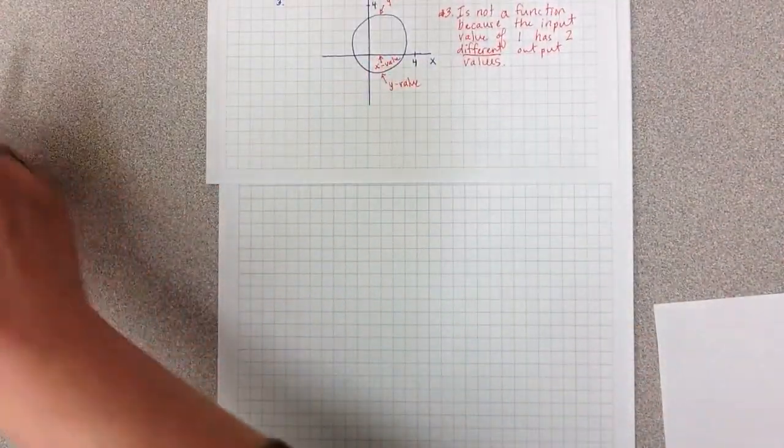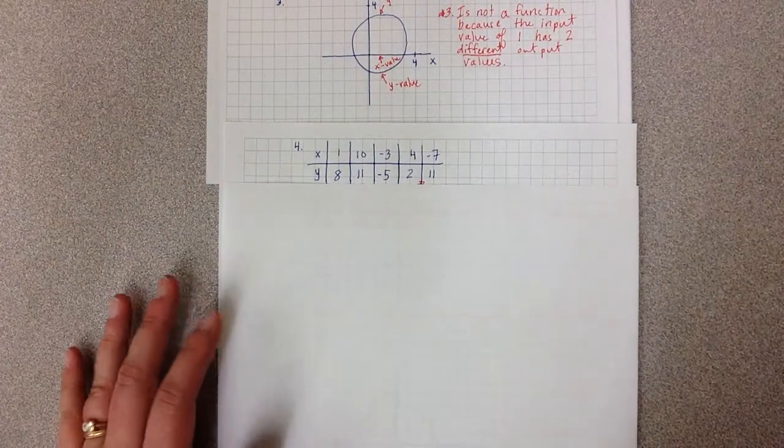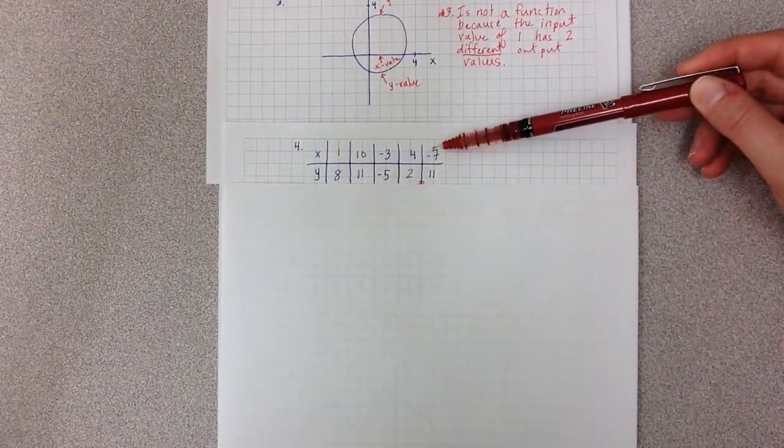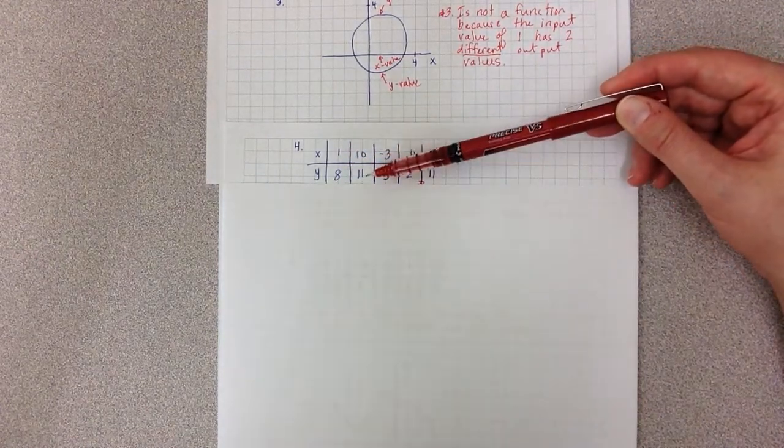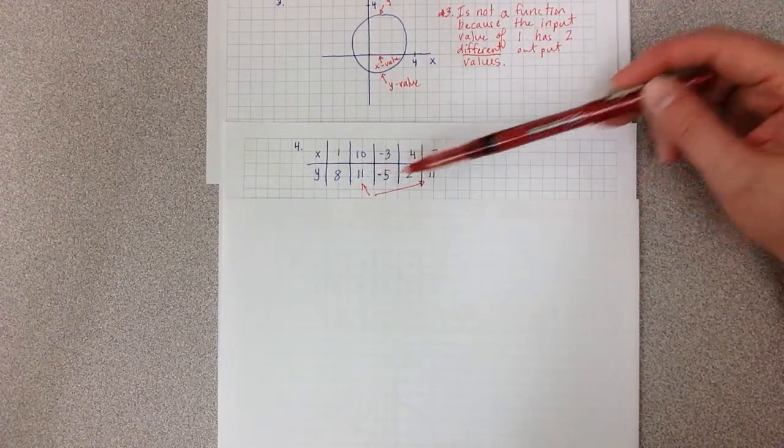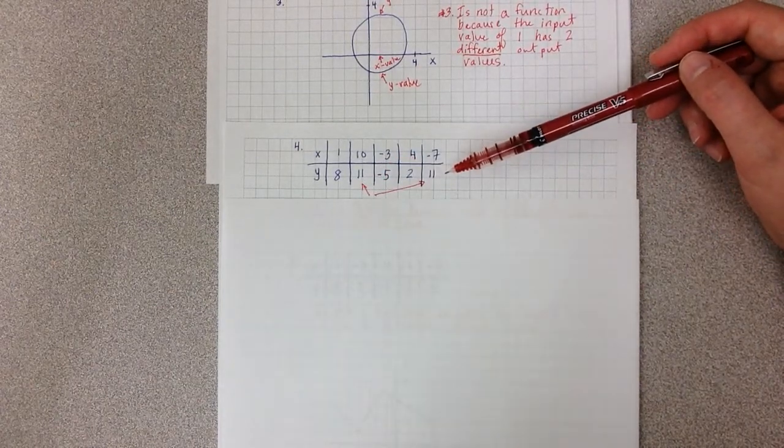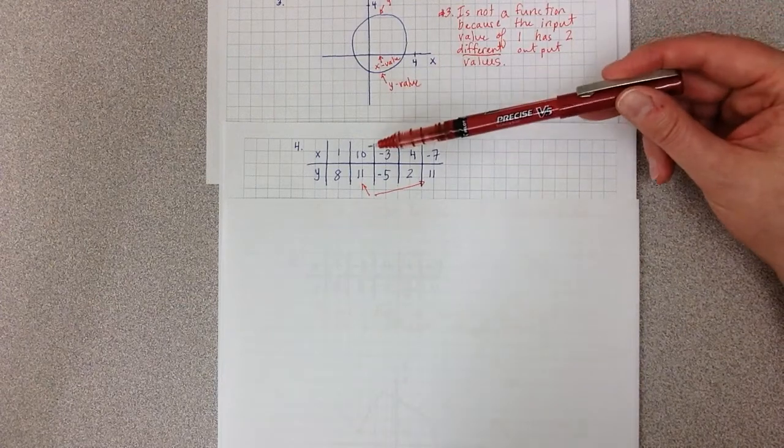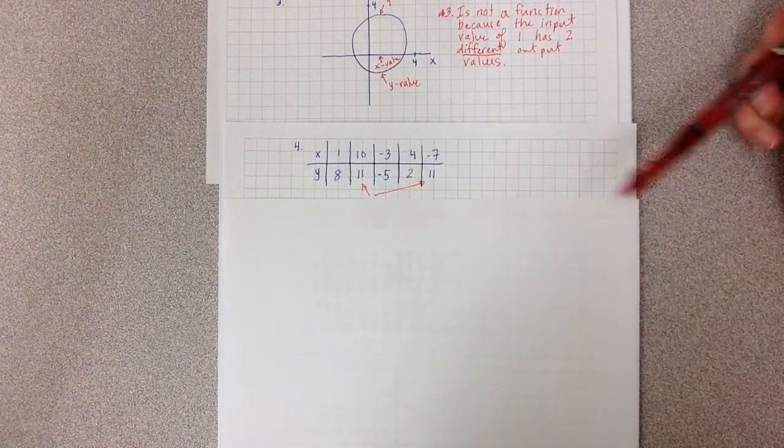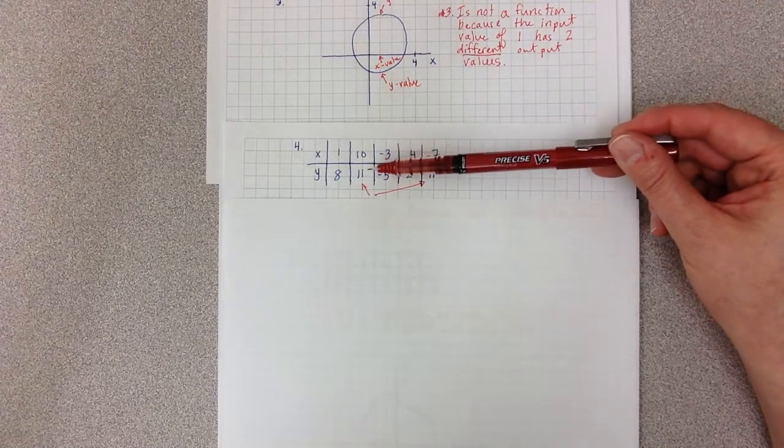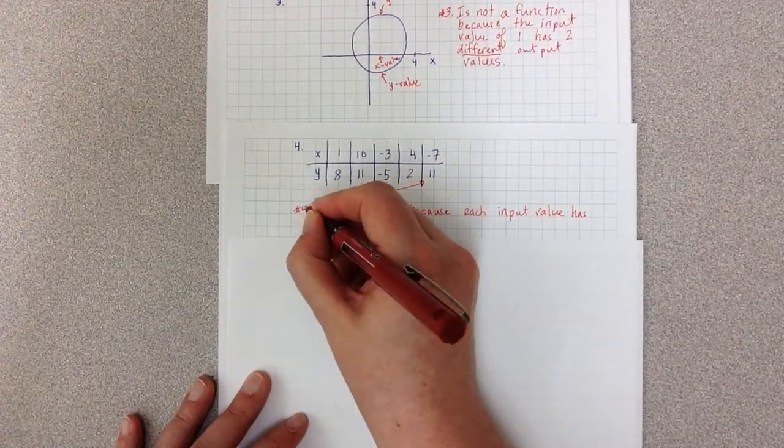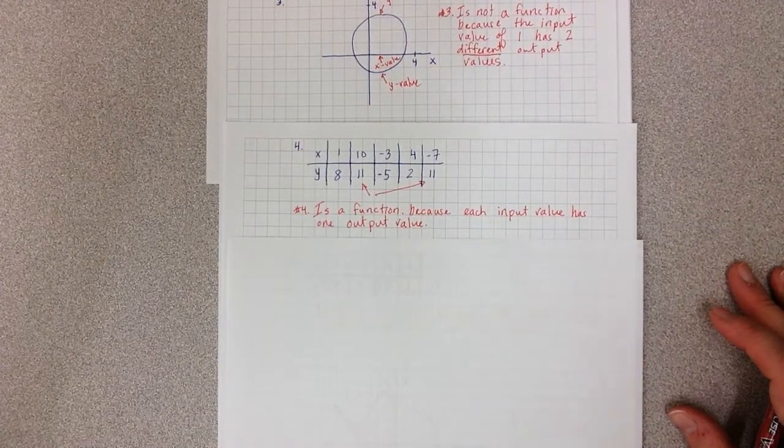Example 4, we're given a table of values again. And again, I ask that first question: do any of my x's repeat? And they don't. Now, the tricky thing here is that the 11 and the y's do repeat. But that's not the test. The test is not do the y's repeat, the test is do the x's repeat? And if they do, do they get the same answer or different answers? Each x value gets me only one answer. So number 4 is a function because each input value has one output value.